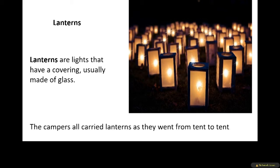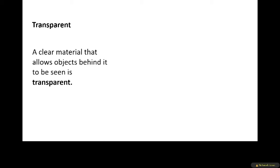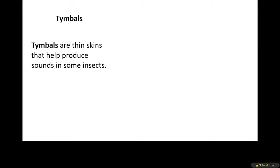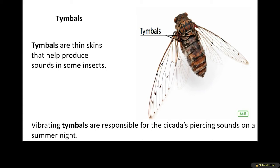The next word is transparent. A clear material that allows objects behind it to be seen is transparent. I could see every detail on the coins when I looked through the transparent magnifying glass. The next word is tymbals — thin skins that produce sounds in some insects. Vibrating tymbals are responsible for the cicada's piercing sounds on a summer night.